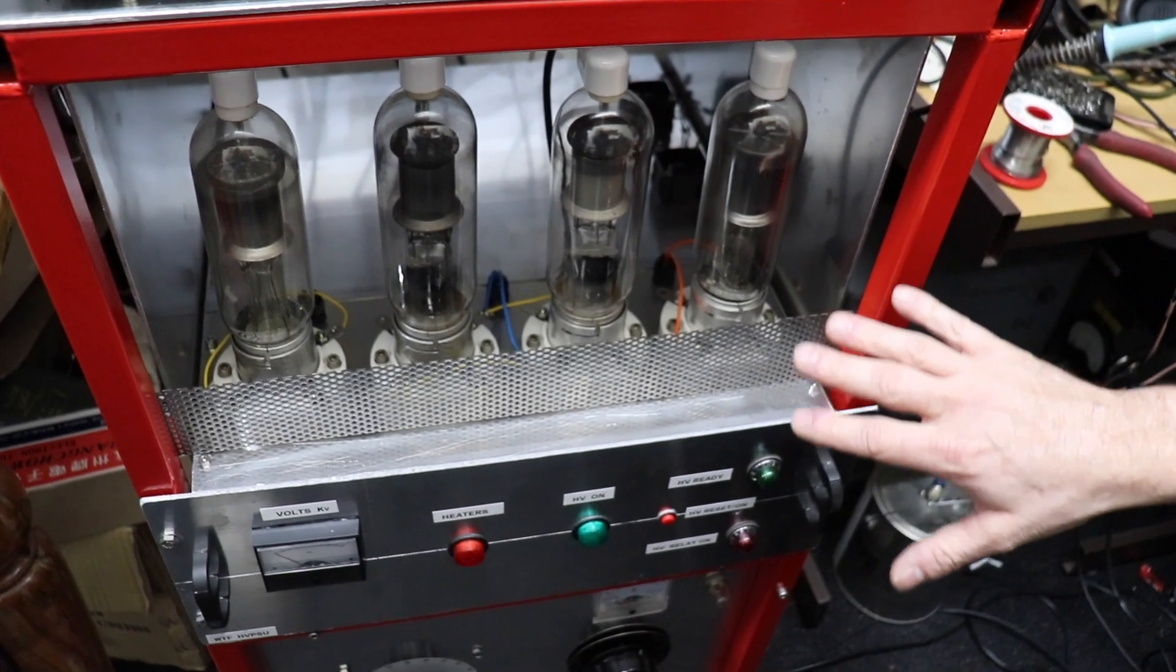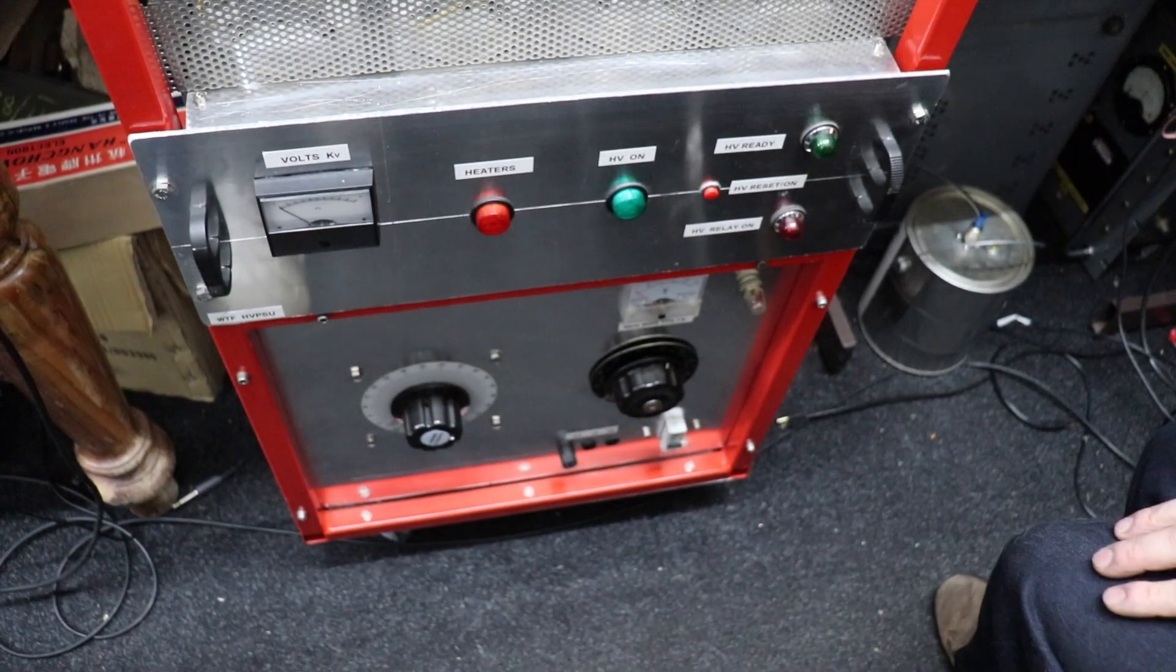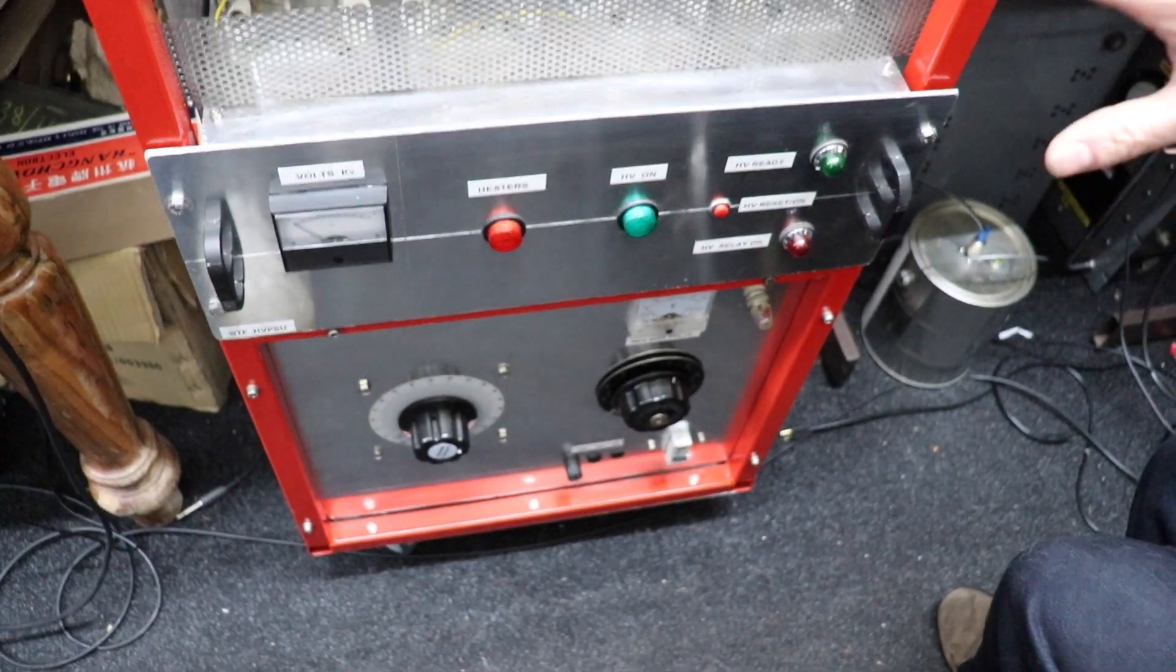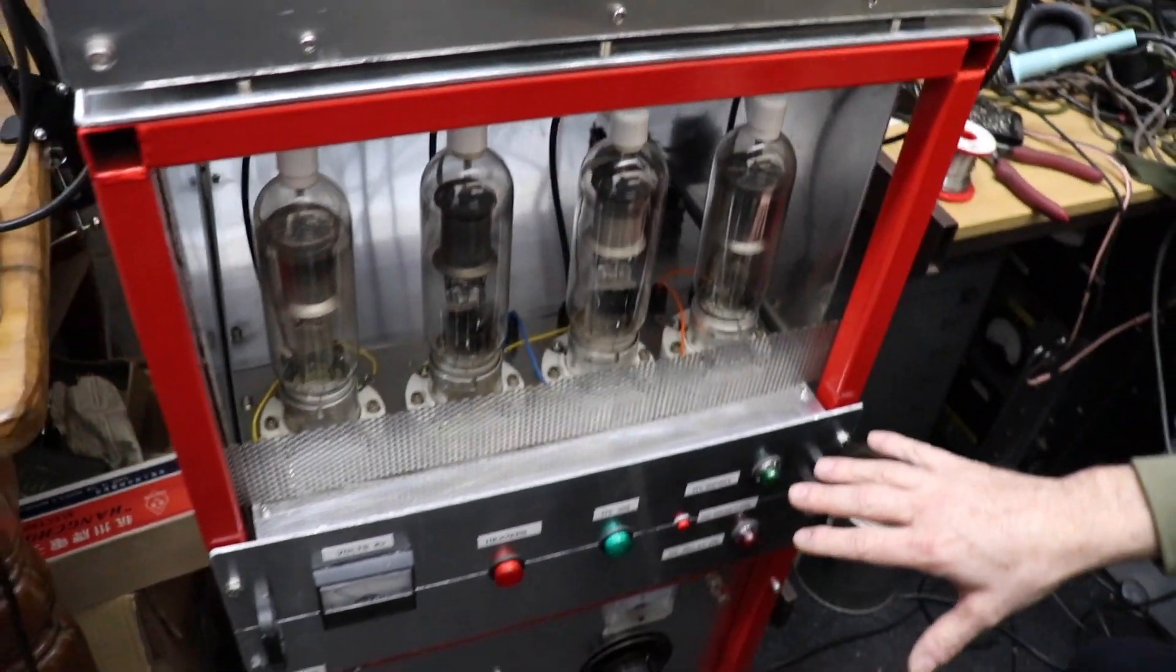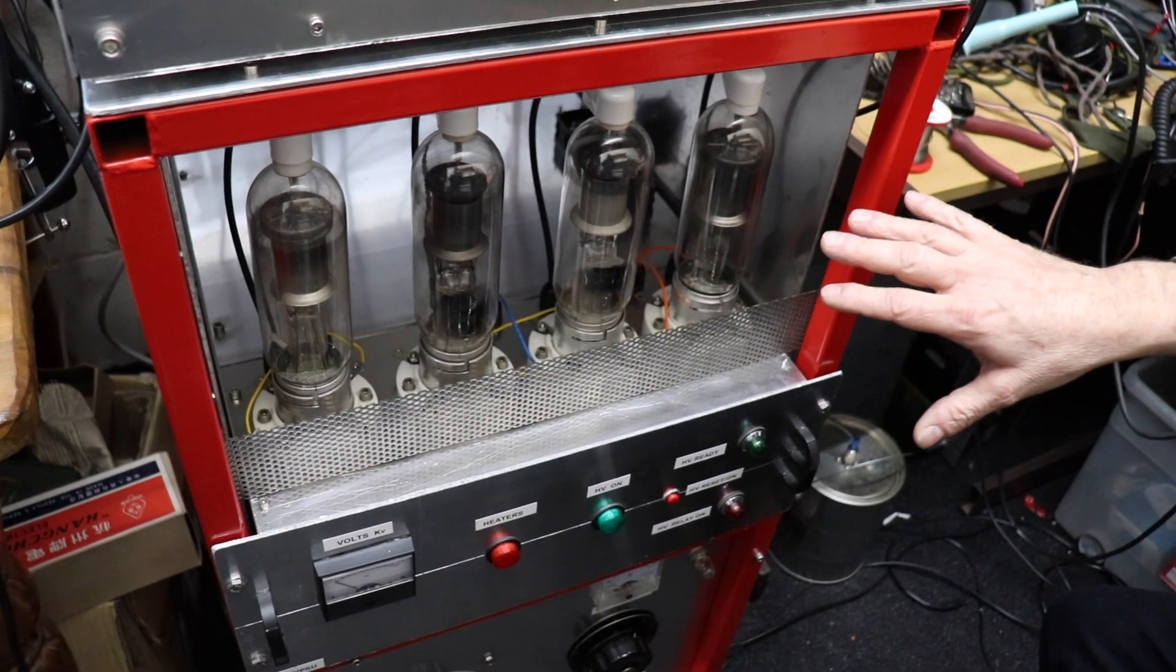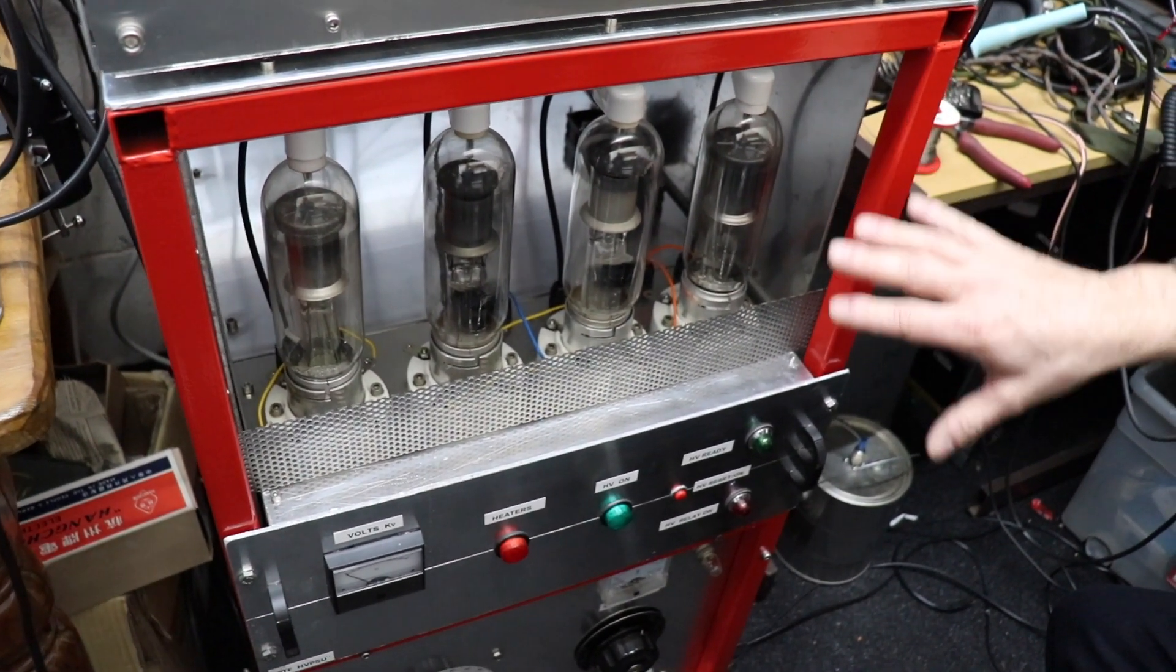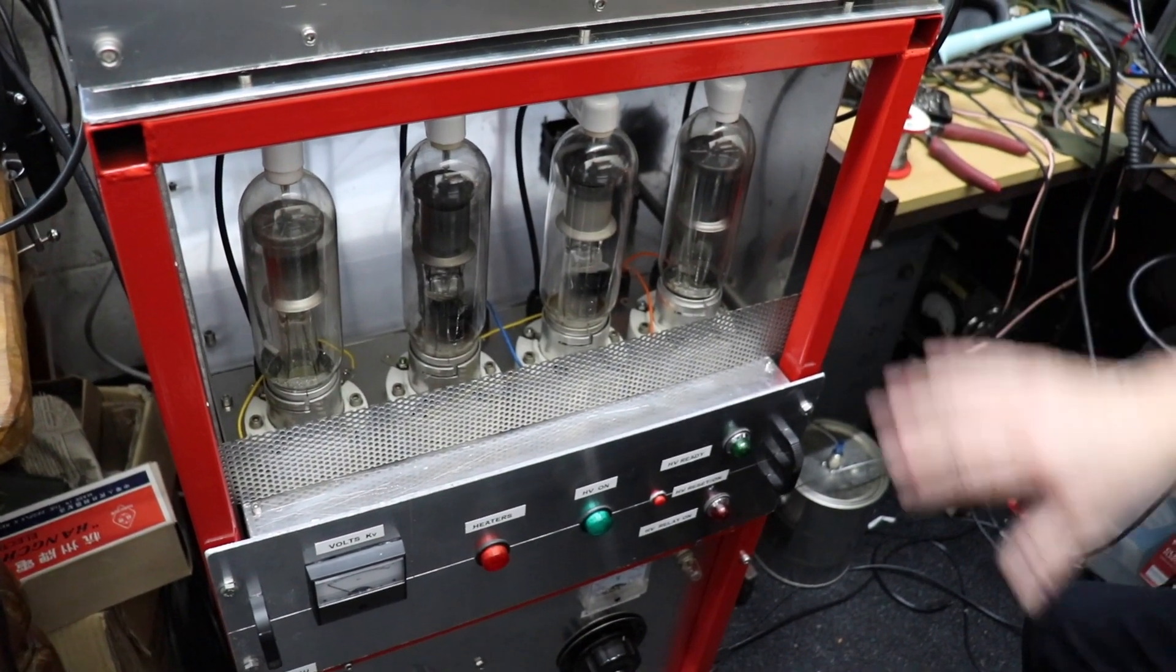This is a traditional high voltage power supply which I have done a separate video for. It's typically with a high voltage transformer, rectifiers, and this is the old school way of building power supplies for linear amplifiers.